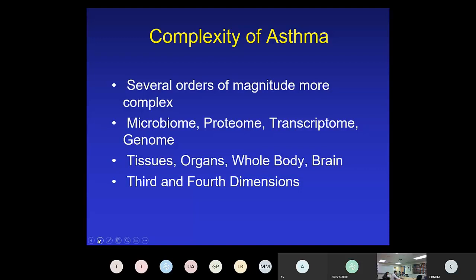When you see diagrams about receptors and which cells are doing what, all of that is occurring in three dimensions. The receptors all take place and interact in a three-dimensional way, and over time, so there is a fourth dimension. Asthma is highly complex.